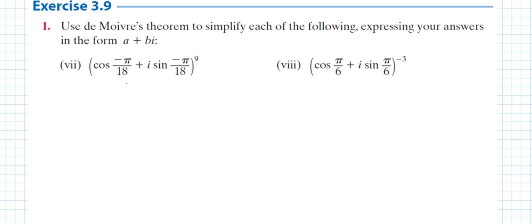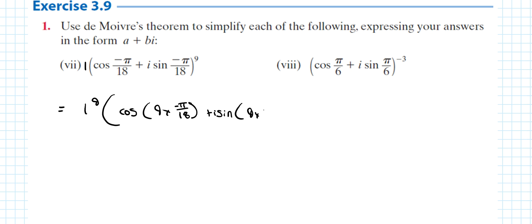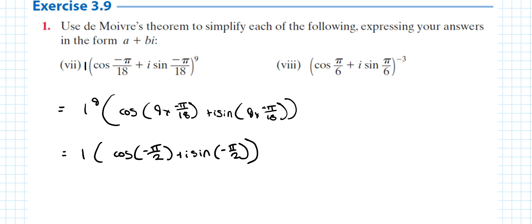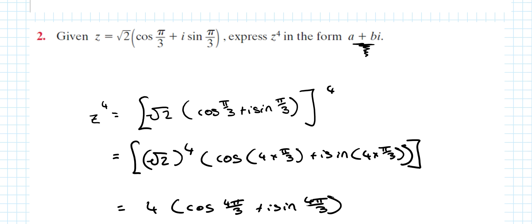It doesn't matter if the angle is negative. The modulus is still 1 out the front. So it's 1 to the power of 9: cos(9 × (−π/18)) + i sin(9 × (−π/18)) = cos(−π/2) + i sin(−π/2). That gives 0 for cosine and −1 for sine, so the answer is 0 − 1i.